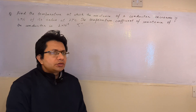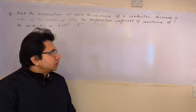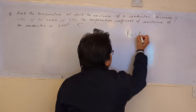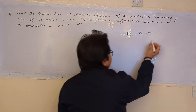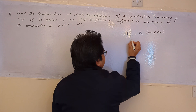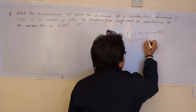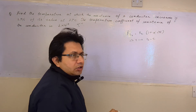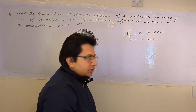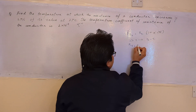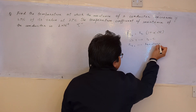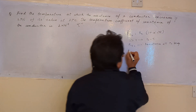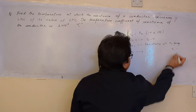This question is based on the topic of temperature dependence of resistance. The temperature dependence of resistance can be expressed by the formula: R_T2 equals R_T1 bracket 1 plus alpha delta T. Here delta T is the temperature difference T2 minus T1. Alpha is the temperature coefficient of resistance, which is generally positive for conductors. R_T2 is the resistance at temperature T2, whereas R_T1 is the resistance at temperature T1.